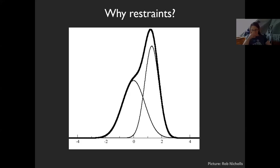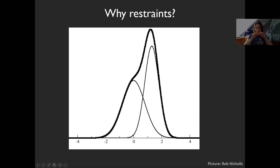Why do we need restraints? Imagine two atoms — one with a B-factor of 20, another larger with a B-factor of 50 — 1.3 angstroms apart. While the individual form factors may look fine at this resolution, the sum of the two looks very flat with no distinguishable maximum. You need something to keep these two atoms from falling into the same density peak in the electron density. That's what restraints are for.